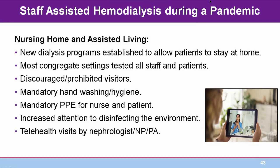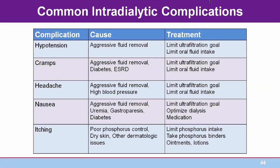Routine treatment of conventional, three-times-per-week hemodialysis has been taking place in assisted facilities for over 40 years in the U.S. But even with best practices and safety precautions in place, complications do occur. This chart lists the most common events, their usual causes, and potential treatments. Most facilities have standing orders that the nurse follows to treat these complications. More information about these potential complications, along with what patients experience between conventional hemodialysis treatments, can be found in ANNA's Core Curriculum for Nephrology Nursing.